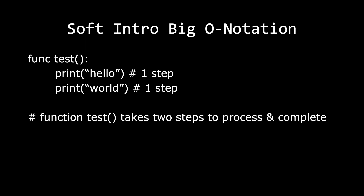Let's go into a soft intro into Big O notation — it doesn't have to be complicated. You've always been exposed to Big O notation if you've watched any videos on coding. With Big O notation, we say that the function called 'test', which takes zero arguments, takes two steps to complete — because each print statement, each line of code, is a single step. Since we have two print statements, function test takes two steps to process and complete.